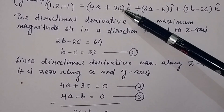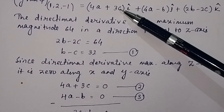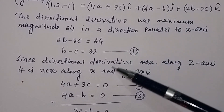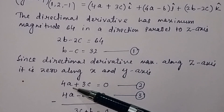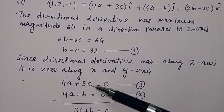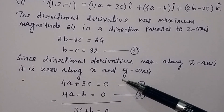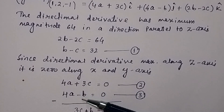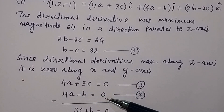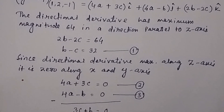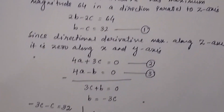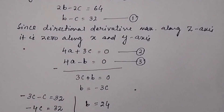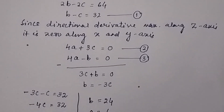This gives us: 4a + 3c = 0 (equation 2) and 4a - b = 0 (equation 3). We now solve equations 1, 2, and 3 to find the values of a, b, and c.